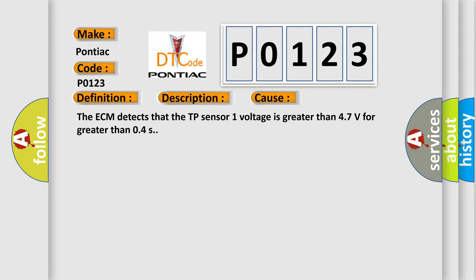The ECM detects that the TP sensor 1 voltage is greater than 4.7 volts for greater than 0.4 seconds.